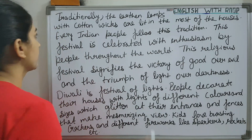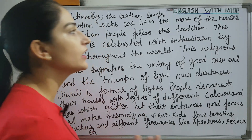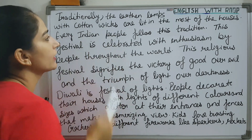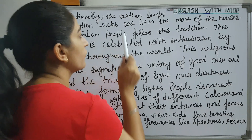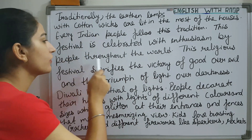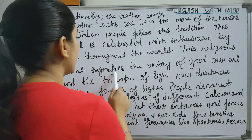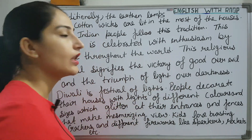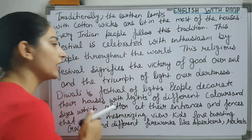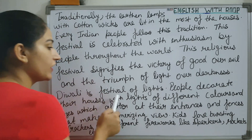Cotton wicks are lit in most of the houses. The earthen lamps — when we put the wick in the middle of the lamp, we put the cotton wick inside. Every Indian follows this tradition. This festival is celebrated with enthusiasm by people throughout the world. This religious festival signifies the victory of good over evil, the triumph of light over darkness.